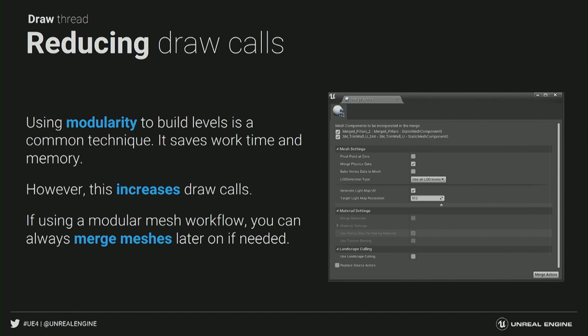Modularity is great when building levels — it makes things easier to mix and match pieces and create gorgeous levels, saves time — but the problem is it increases draw calls because you have a lot of different objects. If you're using a modular mesh workflow and there are parts of your level you can merge, Unreal has the Merge Actors tool. It not only merges all the meshes into a single asset but also atlases the textures of the given materials, automatically creates simpler materials, and atlases all the textures into a single texture — ensuring it's a single draw call. Make sure you have the Merge Materials option enabled when doing this.